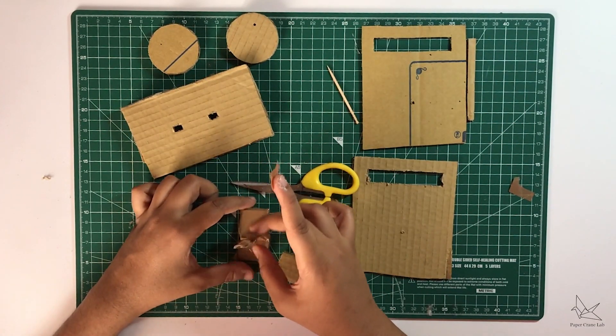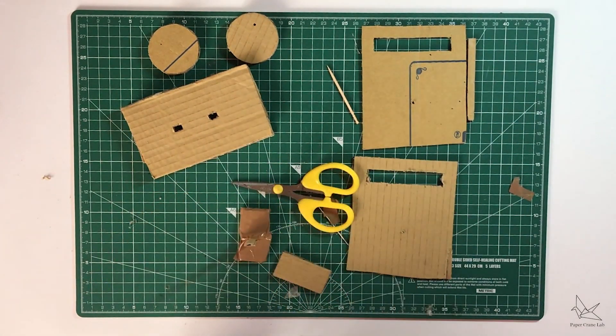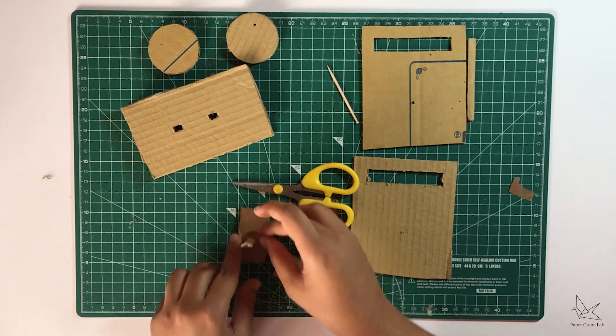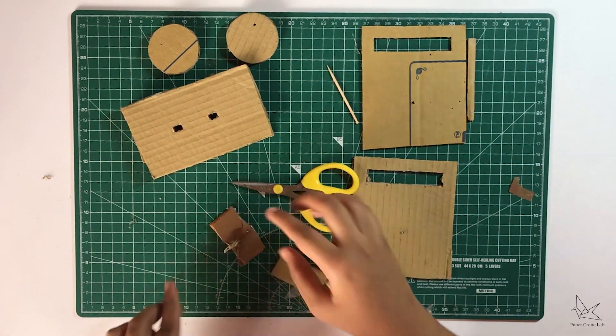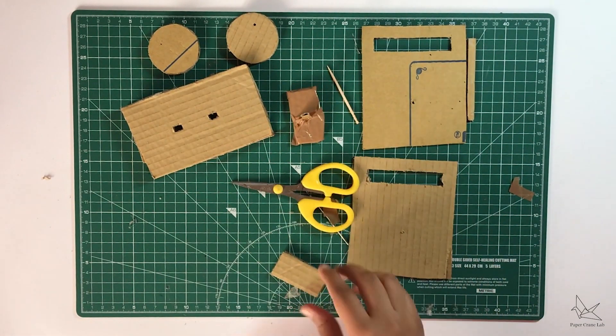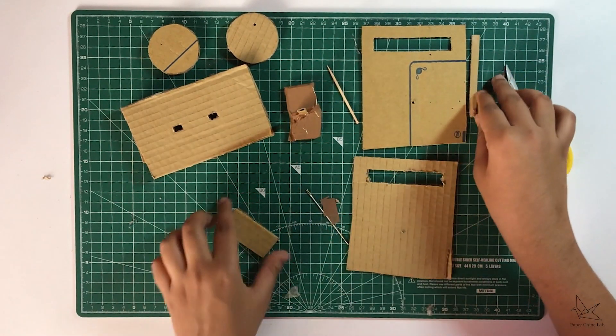If it still has a bit of wiggle room you can put another layer of tape on the sides here like this. We're going to be doing this to the other rod as well.